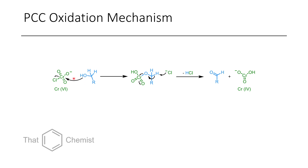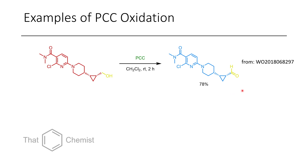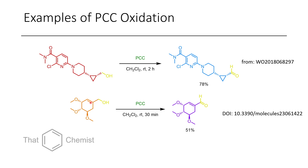The mechanism of PCC: the alcohol attacks the chromium(VI) center, displacing a chloride. The chloride then abstracts one of the hydrogens from the alcohol now bound to the chromium. This C–H bond donates its electron density into the C–O bond, and the O–chromium bond donates its electron density into the chromium center, reducing it from chromium(VI) to chromium(IV), while eliminating hydrochloric acid to form the aldehyde. Examples from the literature include the oxidation of a cyclopropane-containing alcohol cleanly converted to the aldehyde in the presence of various nitrogen-containing functional groups, and a tri-ether allylic alcohol converted to an alpha-beta-unsaturated aldehyde very cleanly in 30 minutes at room temperature, though in somewhat low conversion.